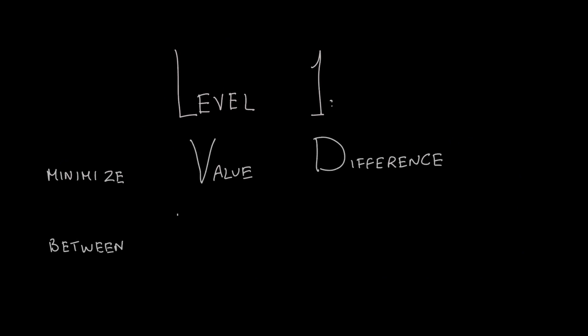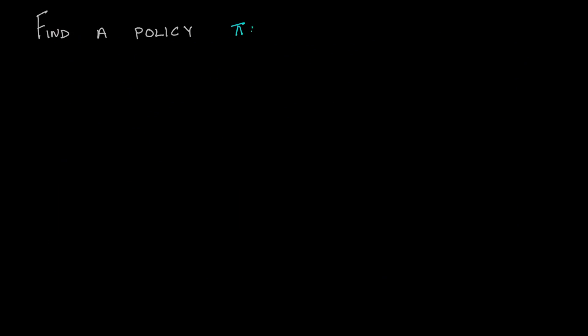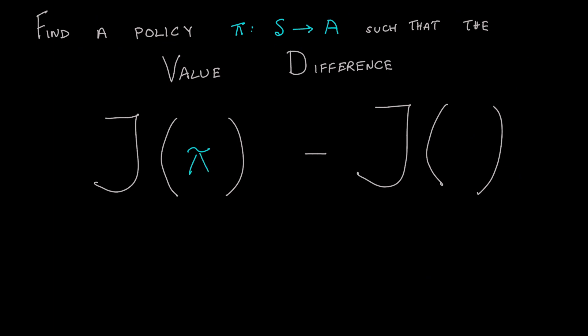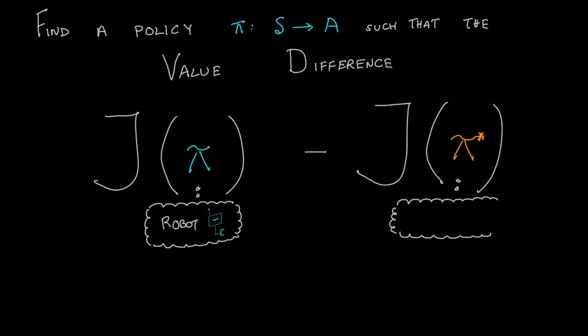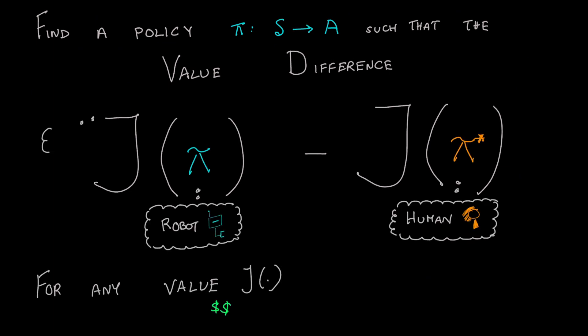The goal of a robot is to do a task that the human has in their mind, like making them a cup of coffee. Find a robot policy pi such that the difference in values between the robot policy and the optimal human policy is minimized for any definition of value that the human cares about.